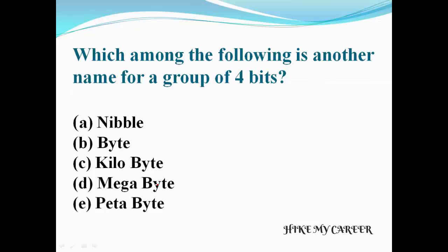Next question: which among the following is another name for a group of 4 bits? A: Nibble, B: Byte, C: Kilobyte, D: Megabyte, E: Petabyte. Answer is Nibble. Nibble is a group of 4 bits. This is a very important question — please note it.